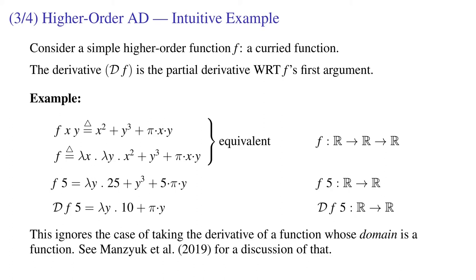and we'll get the partial derivative of f with respect to its first argument. So a map from y to the derivative of that expression with respect to x at the point x equals 5 and y. I'm ignoring derivatives of functions whose domain is a function. Read the paper for that.